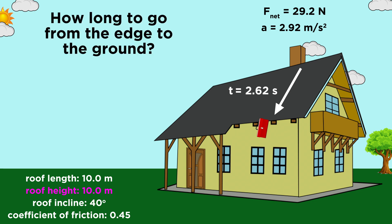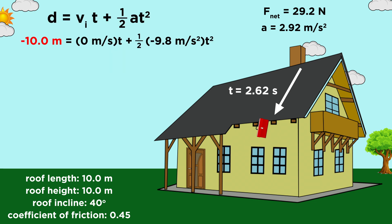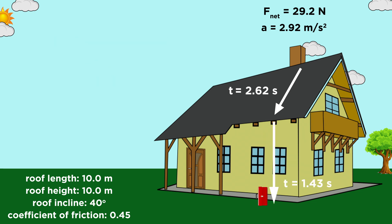Once it leaves the roof, it is falling another ten meters straight down under the force of gravity. For that, we can approximate starting from rest in the vertical direction, and plug in ten meters, zero for initial velocity, acceleration due to gravity. Then rearrange, take the square root, and we get one point four three seconds for the time it takes to fall from the roof to the ground.